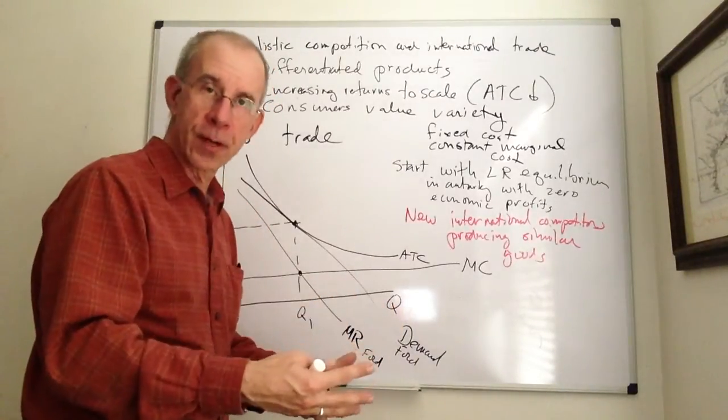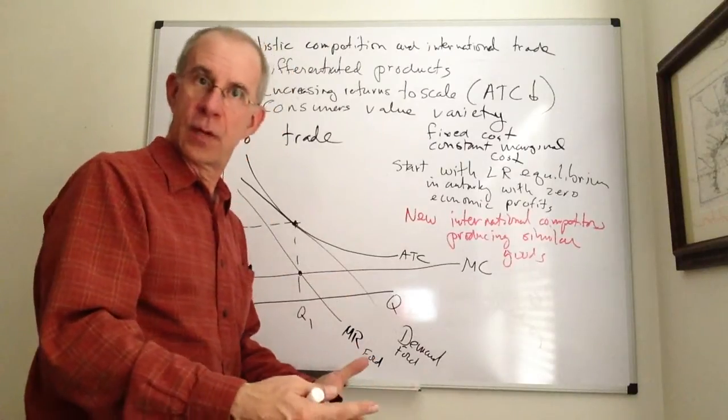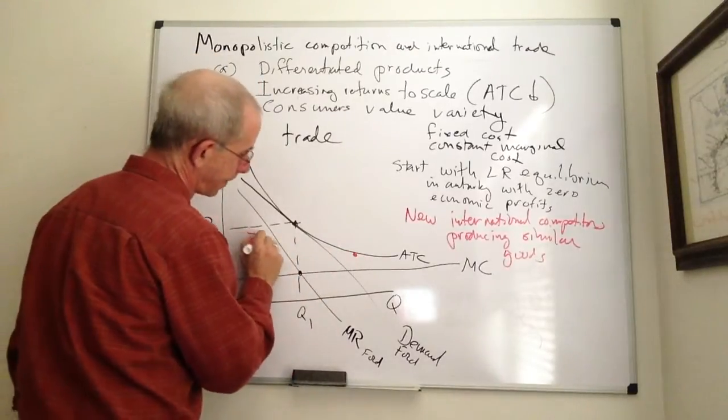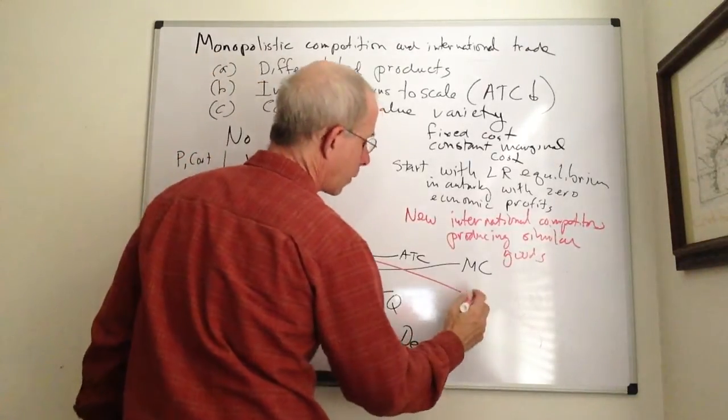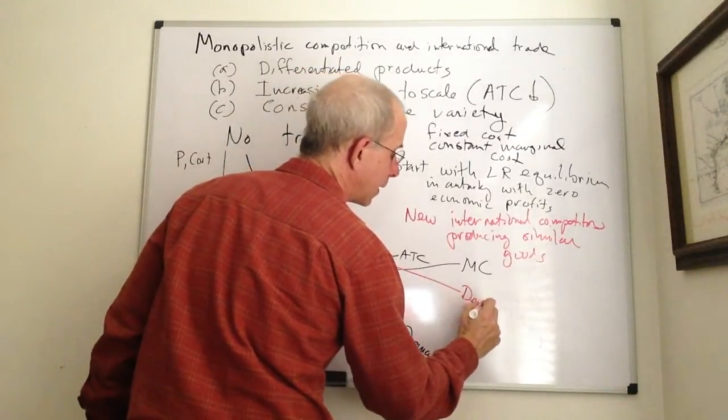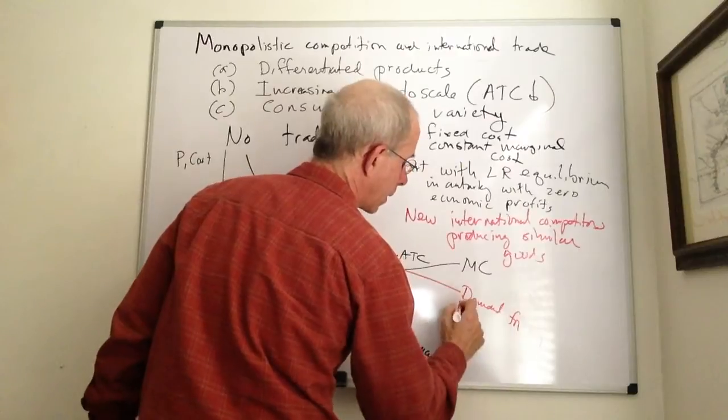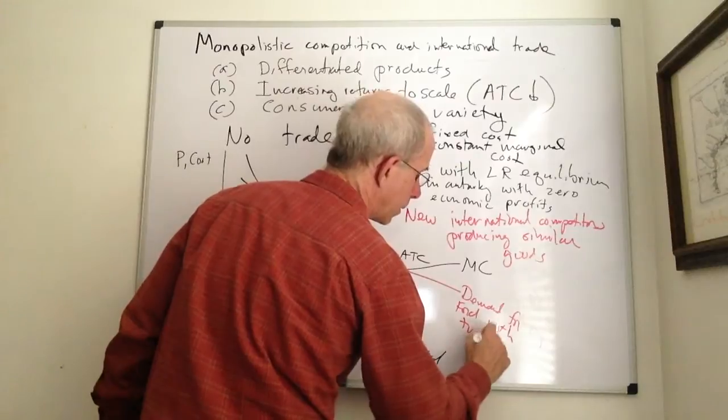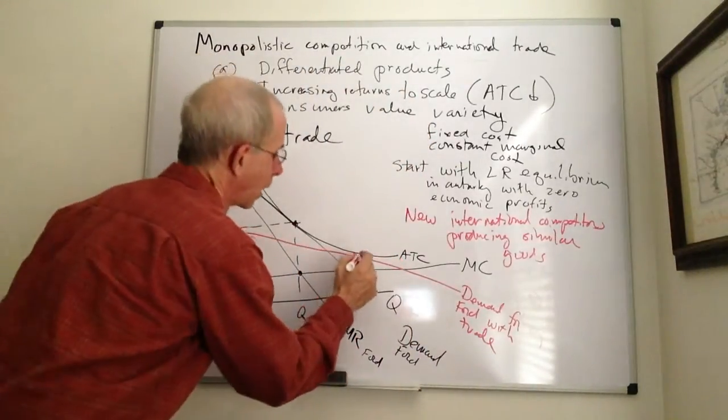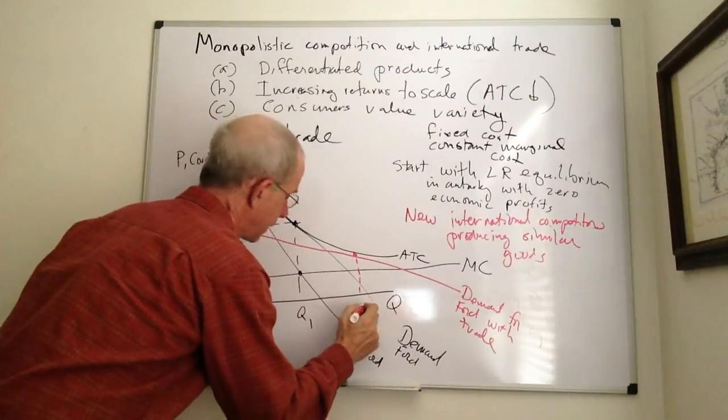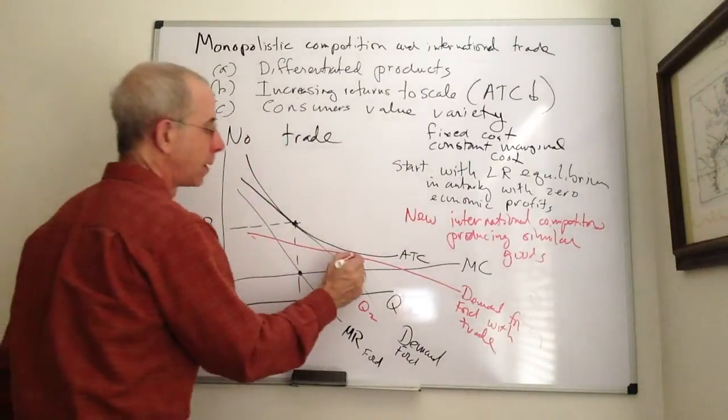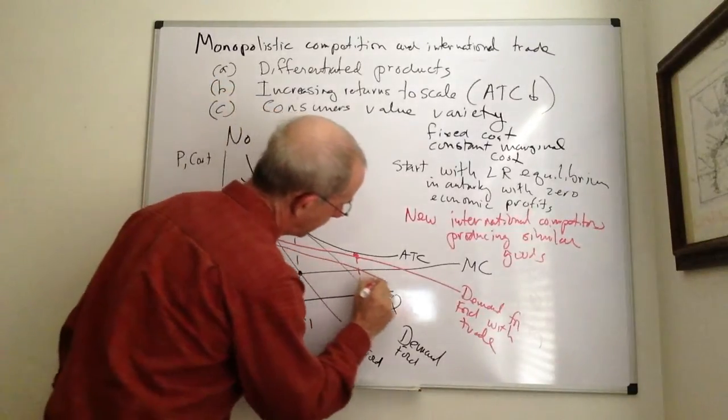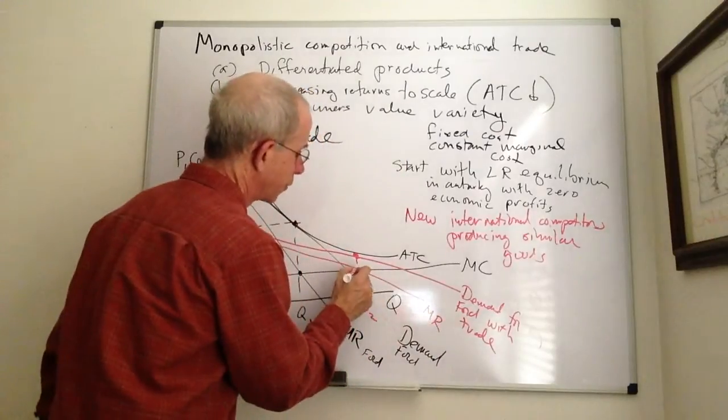So, if we look at the new long-run equilibrium, when you have the new international competition, this is the demand for Ford with trade. So, here is the new quantity of production,